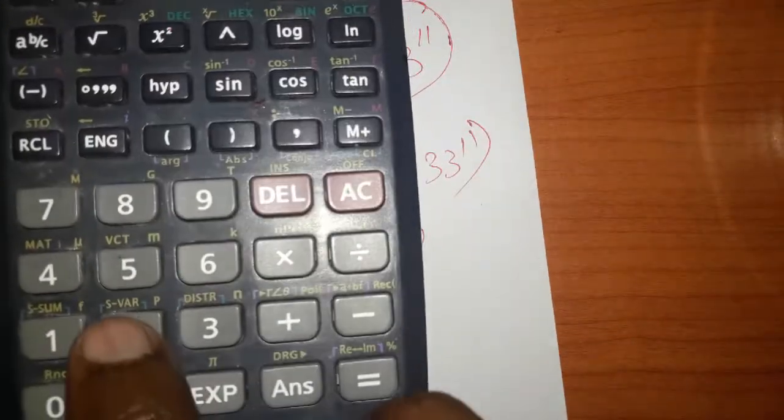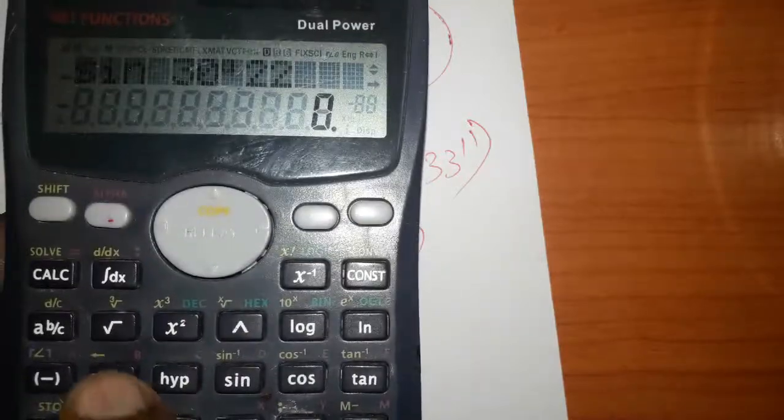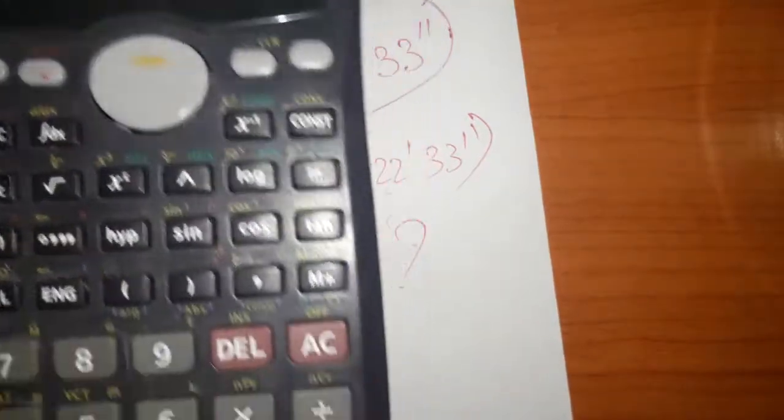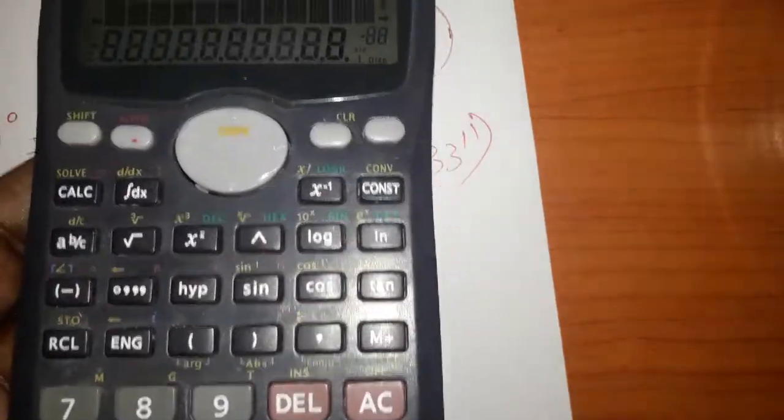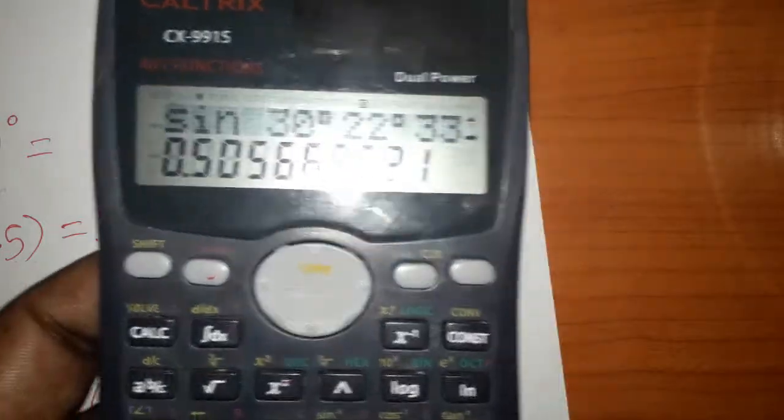22 minutes. So enter 22, press again, and you will get 22 minutes. Again, 33 seconds, press again, and you get 33 seconds. Press equals, and now we'll get the answer. We know sin 30 is